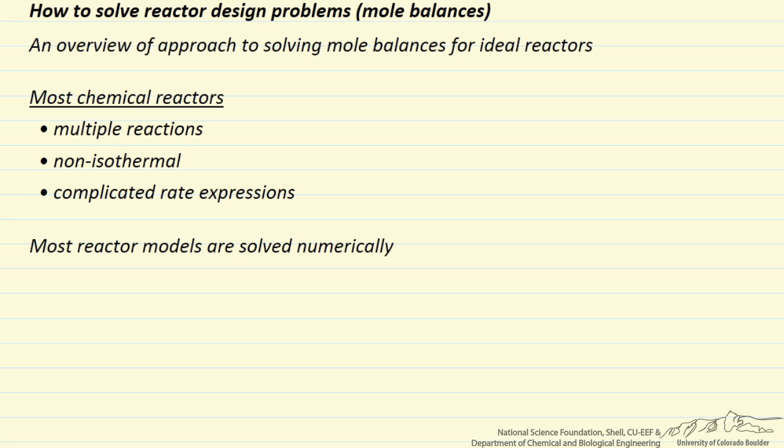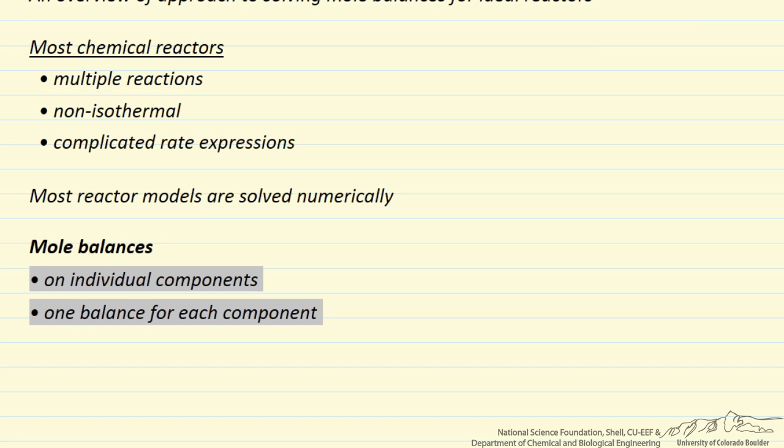Some important aspects to keep in mind when we write down the mole balances: we write mole balances on individual components. That is, we don't write just one mole balance for each reaction. So if we have three reactions, we don't have three mole balances. Instead, we might have six or seven mole balances, depending on how many components are in each reaction.